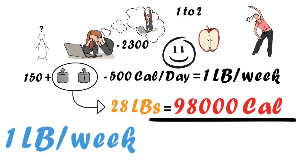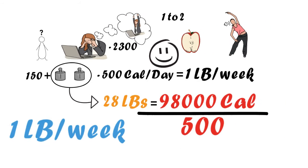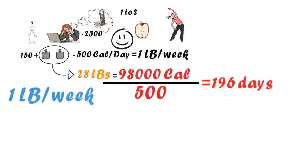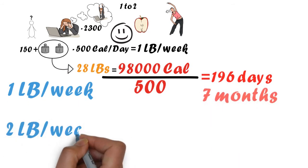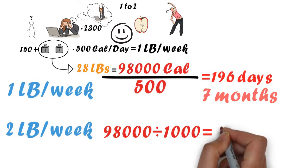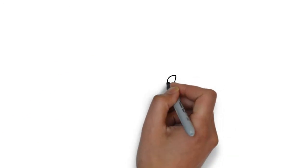So if we lose 1 pound a week and we take the 98,000 divided by the 500 calories, that gives us 196 days which is 7 months. Now if we want to lose 2 pounds a week we do the same calculation and that takes 98 days. That's 3 and a half months.